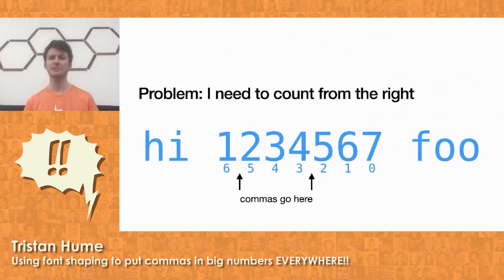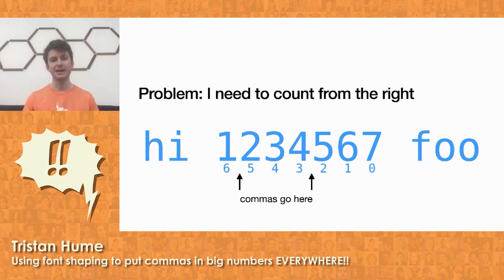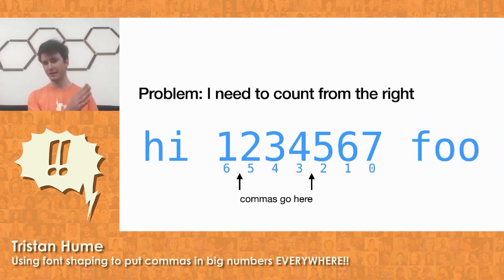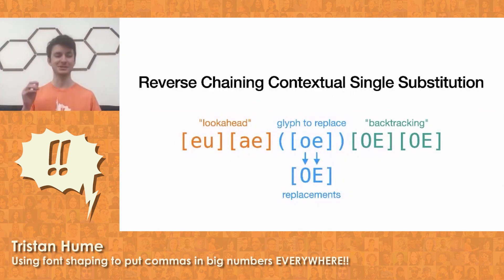I was reading through the specification and started to get a little worried because everything seems to work from the start of the string towards the end of the string, and I needed to work from the end of the number towards the beginning. Luckily, at the very end, I found the reverse-chaining contextual single substitution rule.